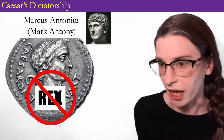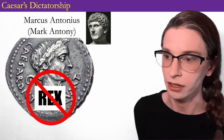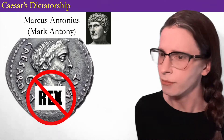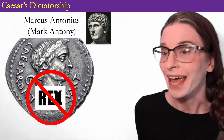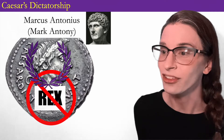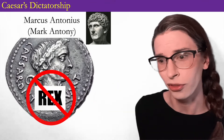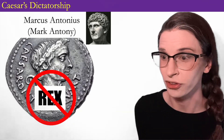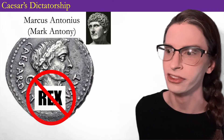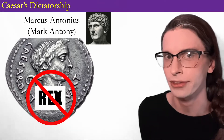Not that it doesn't come up. A crowd of adoring supporters calls him king, to which he responds, "I'm not Rex, I'm Caesar." Antony tries to give him a golden laurel crown, and Caesar refuses it. We'll never know how sincere all this was — maybe he was purposefully testing the waters, or working up to eventually accepting the title of king after he'd refused enough times.